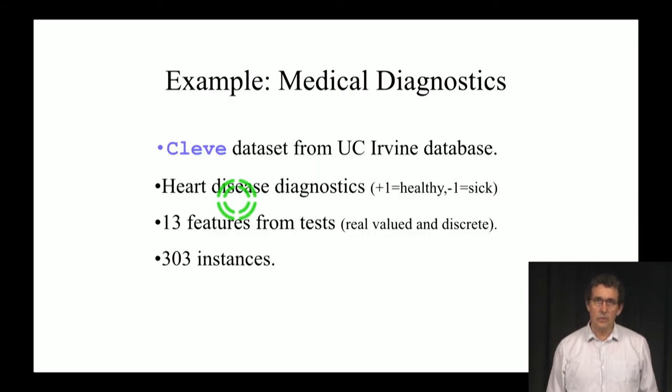Here is an example just to show you that this is actually sometimes a very reasonable way to make predictions. It gives you small but very accurate rules. This is a very small data set. It's the Cleveland data set from UC Irvine. Basically, it has to do with heart disease diagnostics. You have plus one is healthy and minus one is sick. And 13 features that were taken from tests when the person got into the hospital. You need to take these features and decide whether or not they have heart disease. We have not a large number of instances, just 303. Let's see what is the alternating tree that we got.